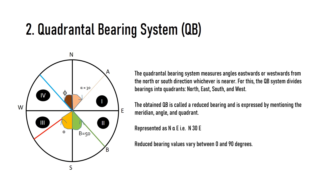Similarly, line OB is in the second quadrant, whose nearest meridian is south. The angle is measured from south to line OB in the anti-clockwise direction (eastwards), giving beta equals 50 degrees, represented as S-beta-E (south beta east).